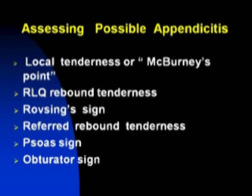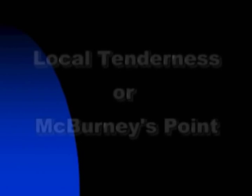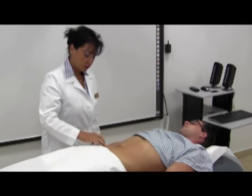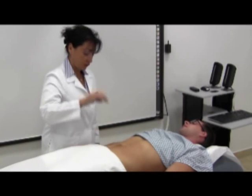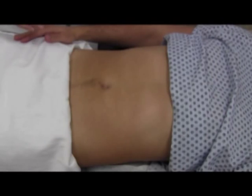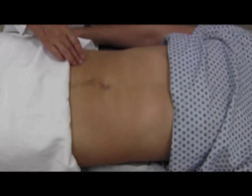Appendicitis. Assess possible appendicitis by checking for local tenderness at McBurney's point, right lower quadrant rebound tenderness, Rovsing's sign, referred rebound tenderness, psoas sign, and obturator sign. Search carefully for an area of local tenderness. Classically, McBurney's point lies on the medial two-thirds of a line drawn from the anterior superior iliac spine to the umbilicus.